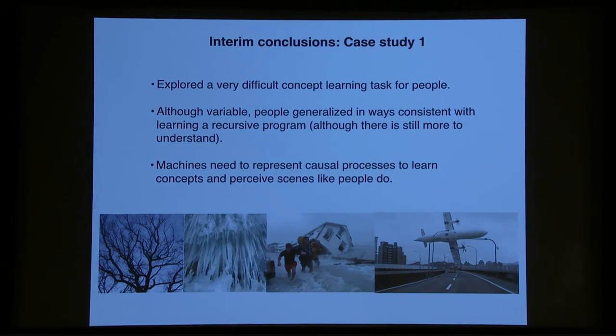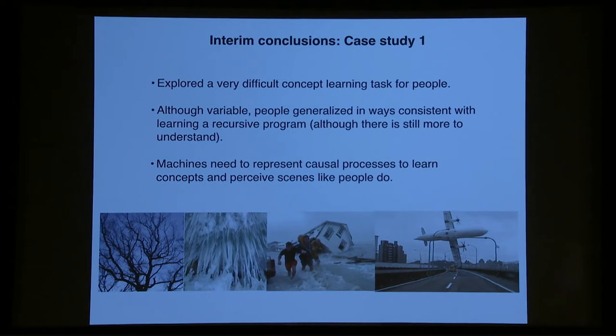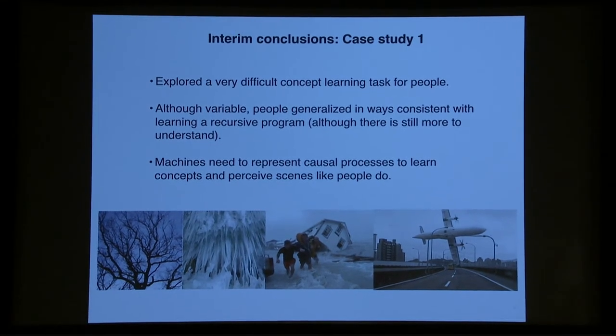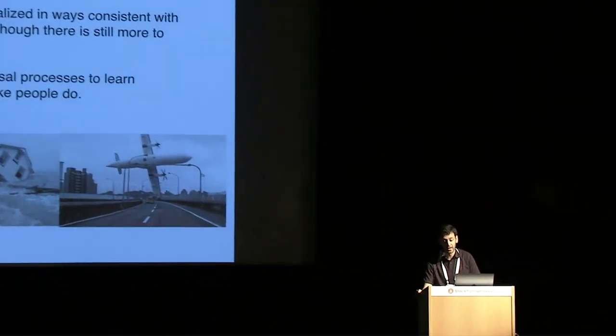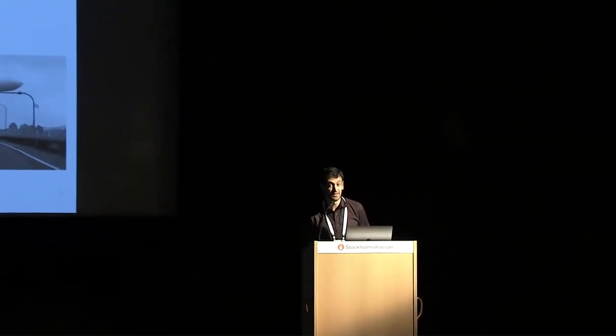And although in machine learning, people often talk about object recognition as though it's solved, machines need to represent causal processes, maybe even programs, to learn concepts and perceive scenes like people do. And this is true for the stimuli in the experiment, but also the motivating concepts in real images that I showed at the beginning. Not just for recognizing them, but to be able to do all the judgments and reasoning that you can do with any of these stimuli.